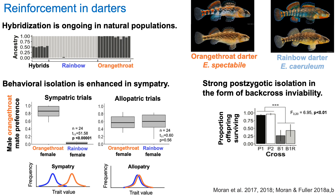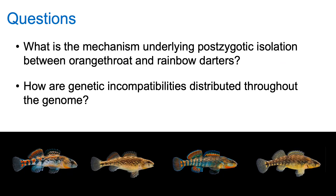I found that strong postzygotic isolation is present in the form of backcross inviability — backcrosses in both directions have really high mortality compared to either parental species cross. We don't know what the genetic basis of this postzygotic isolation is, and we lack data on the genetic basis of reproductive isolation in systems where reinforcement drives speciation. So I wanted to ask: what is the mechanism underlying postzygotic isolation between orange-throat and rainbow darters, and how are genetic incompatibilities distributed throughout the genome — do we see heightened divergence at a few larger regions or many smaller regions?